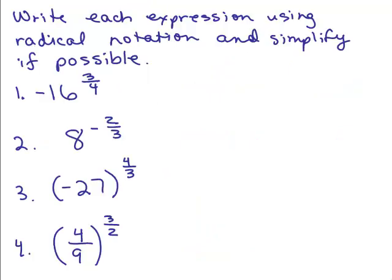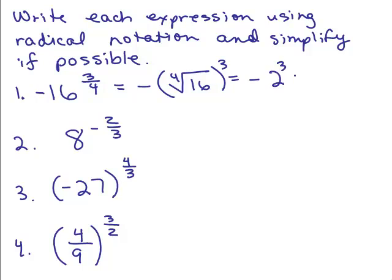Let's try a few problems — pause and try them yourself first. The first one: negative 16 to the 3/4. The minus sign is not part of the base, so we write the minus sign separately. For 16 to the 3/4, I always do the root first — the denominator is the root — so we want the fourth root of 16, and then cube it. The fourth root of 16 is 2, and 2 cubed is 8. So the answer is negative 8.